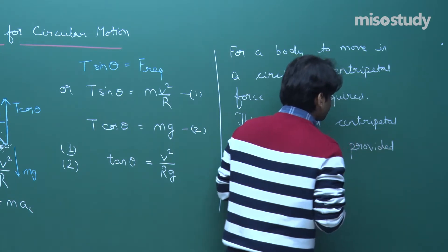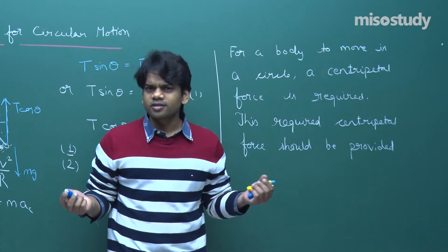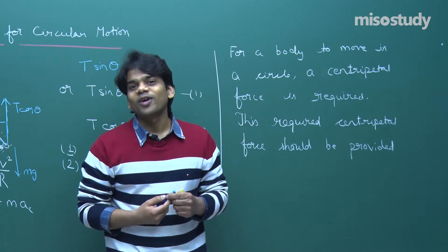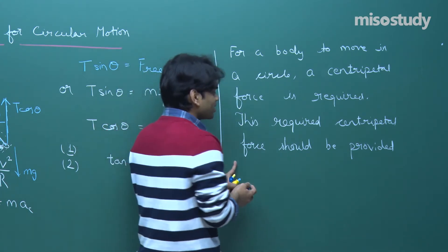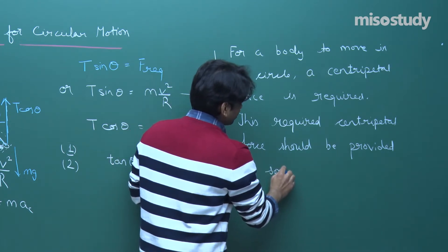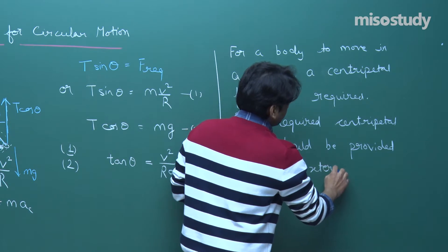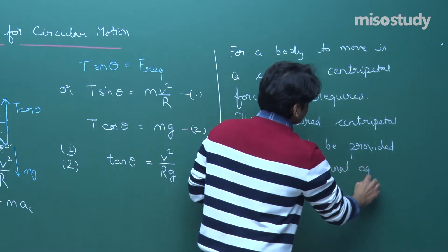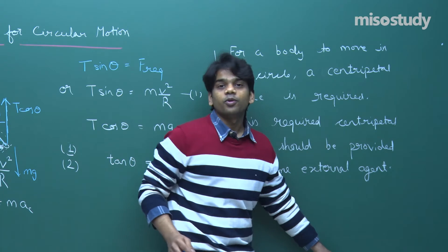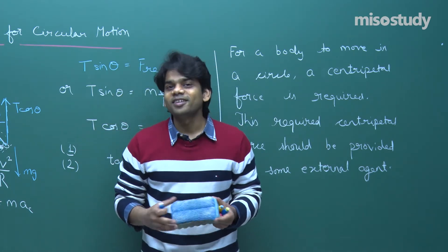In the string-stone case the external agent was tension. In other cases it can be friction or normal force providing the required centripetal force. So one thing is certain: if you move an object in a circle, you need a centripetal force. Let's do a simple example to illustrate this.